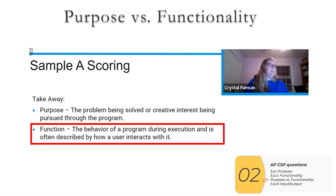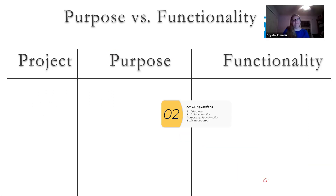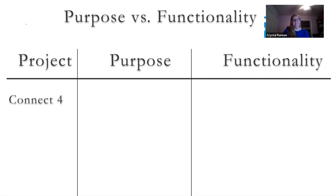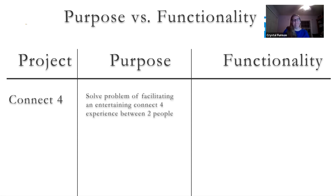I'll go over some examples that the AP board gave us — these are the AP board's examples, and in some cases I've transcribed or fleshed them out; the link is in the description below. The first example is a Connect Four game. The purpose is to solve the problem of facilitating an entertaining Connect Four experience — this is the why, as opposed to the functionality, which is how you move pieces, where they go, and so on.